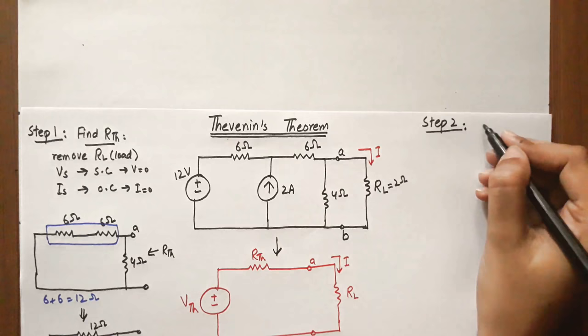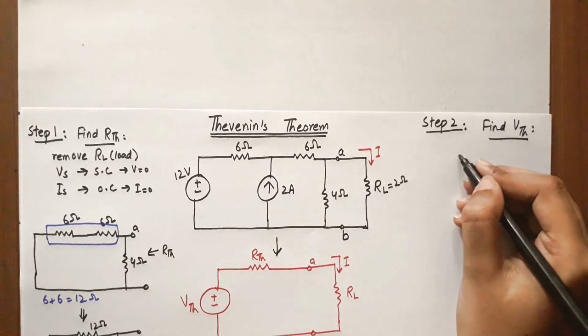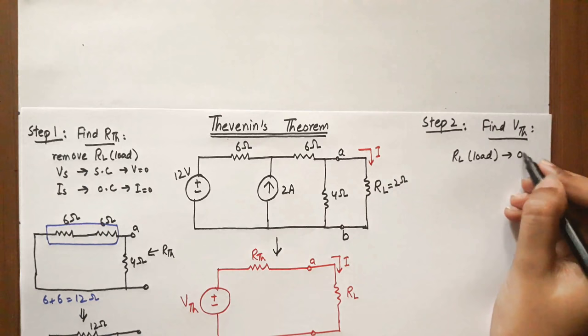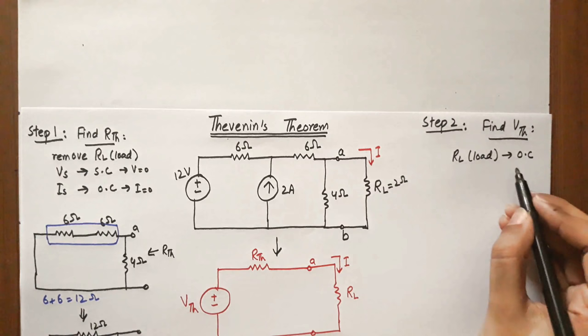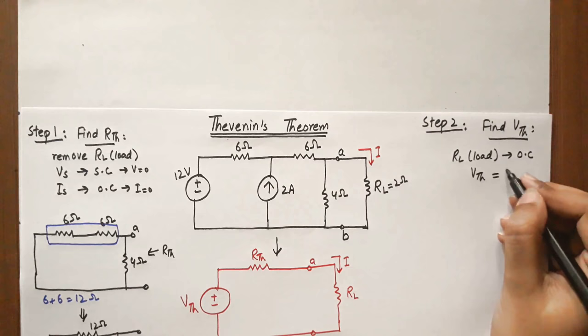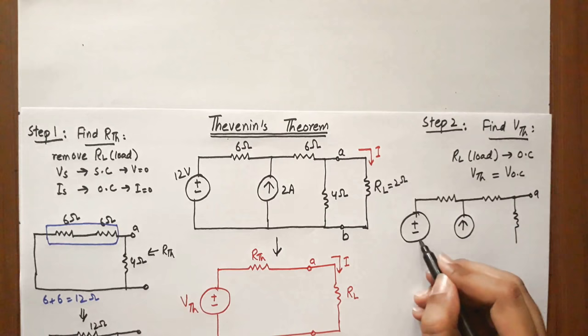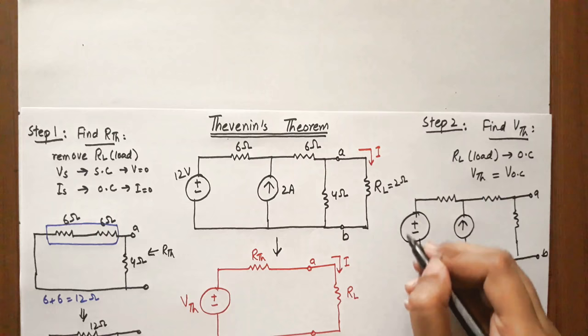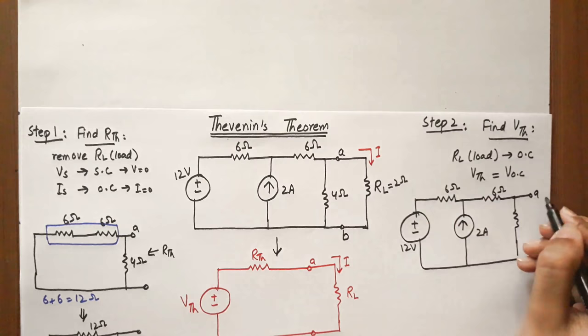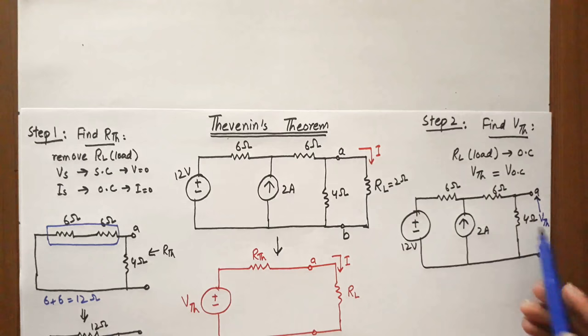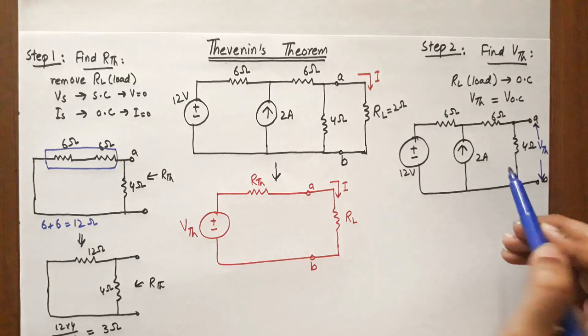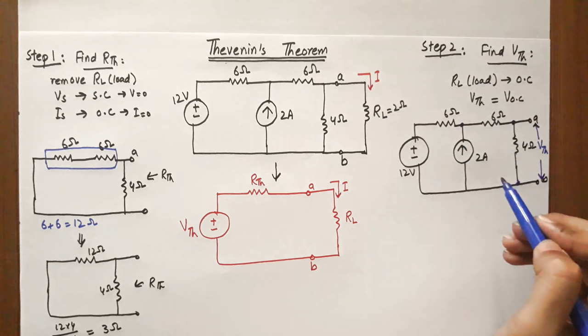In Step 2, we have to find V_thevenin. To find V_thevenin, we open circuit and remove the load as we did for R_thevenin. The voltage V_thevenin equals the open circuit voltage across terminals A and B. The voltage across the 4 ohm resistance equals V_thevenin since both are in parallel and the voltage is the same. We set the node voltages as V1 and V2.